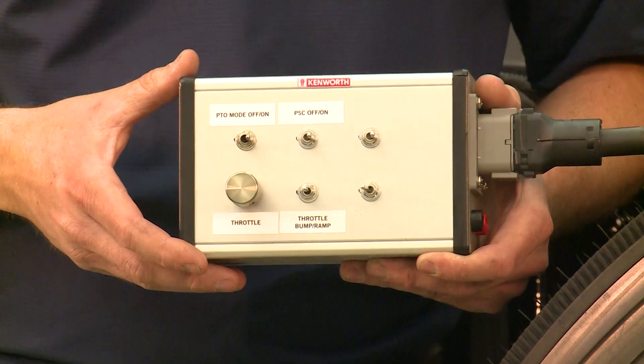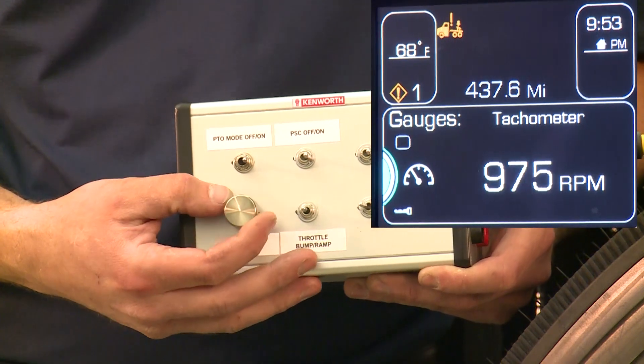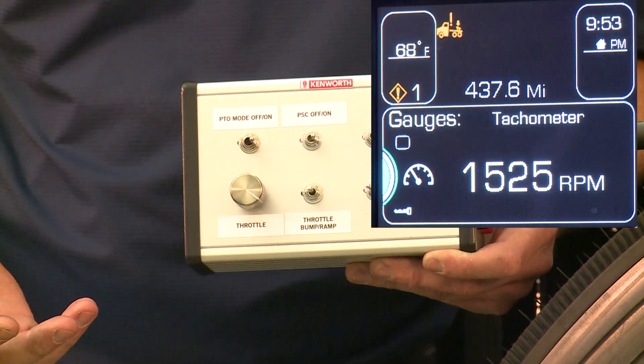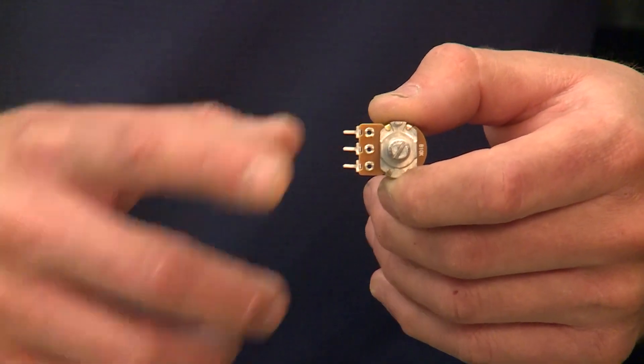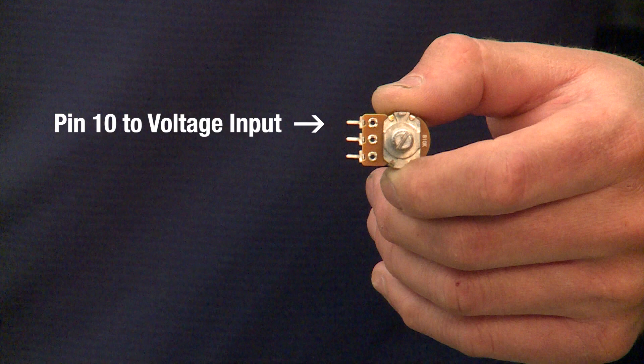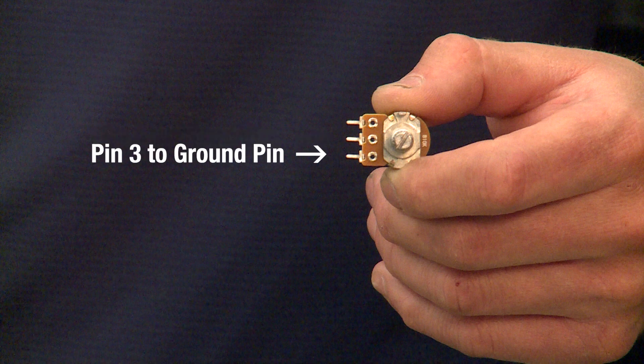Finally, the remote throttle control is also available on the 12-pin connector. The remote throttle allows the engine RPM to be modulated using a knob, dial, or throttle pedal outside of the cab. To use the remote throttle control, pins 3, 4, and 10 from the 12-pin connector will need to be connected to a potentiometer to modulate voltage. Pin 10 provides 5 volts to the voltage input on the potentiometer. Pin 4 is the sensor input which reads the voltage returned and should be connected to the signal pin on the potentiometer. Pin 3 is the analog return or ground which should be connected to the ground pin on the potentiometer.